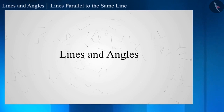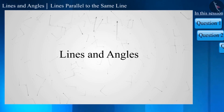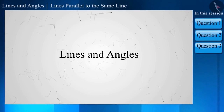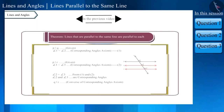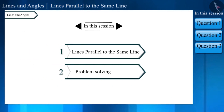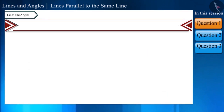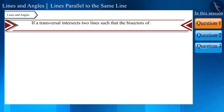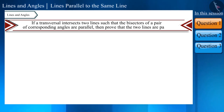Hello friends, welcome to this video on lines and angles. In the previous video we discussed the properties of lines parallel to the same line. Today we will solve some questions related to the same. Let's start with our first question: if a transversal intersects two lines such that the bisectors of a pair of corresponding angles are parallel, then prove that the two lines are parallel.